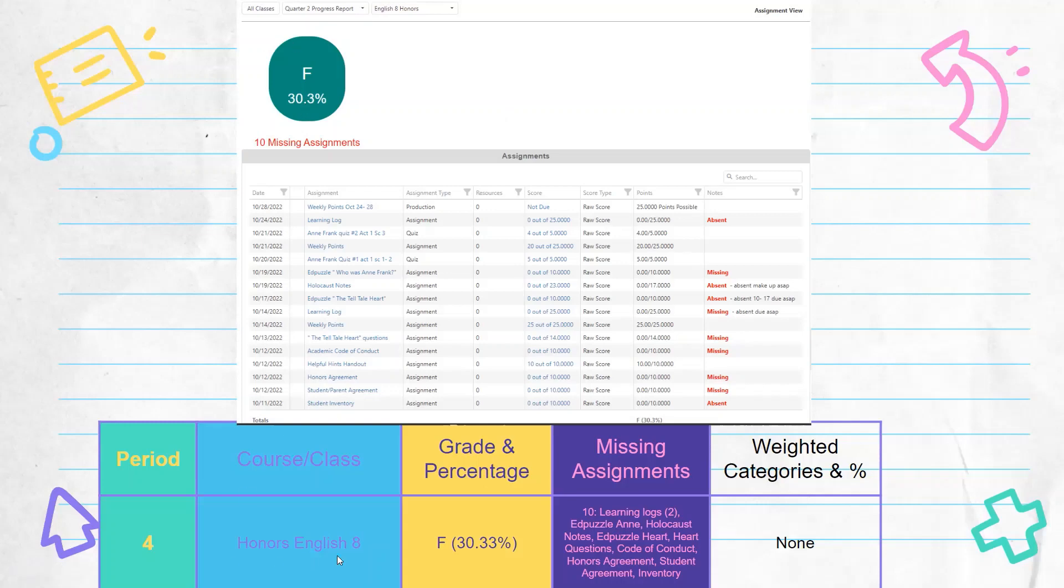So now we're in Honors English. We have that typed in. The grade is a 30.3 percent, which is an F. And there are 10 missing assignments. I went through and counted. 1, 2, 3, 4, 5, 6, 7, 8, 9, 10.